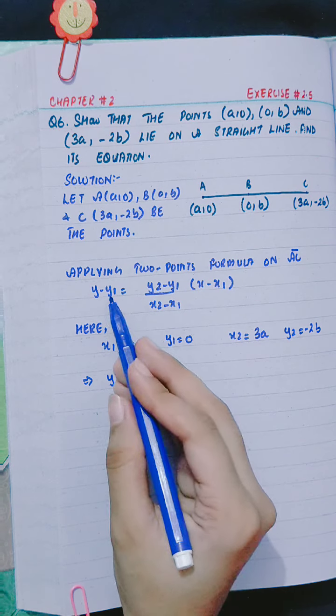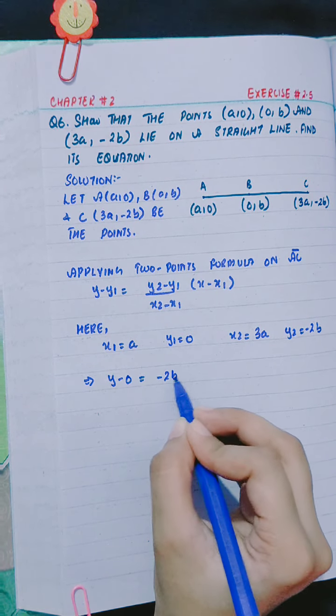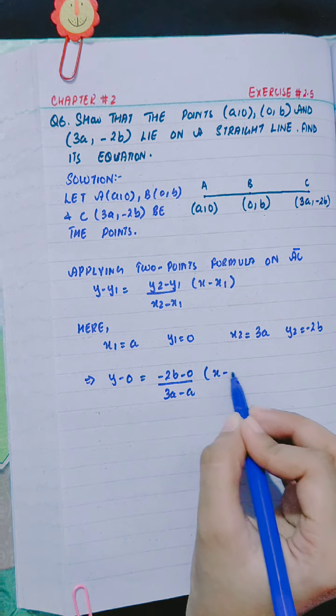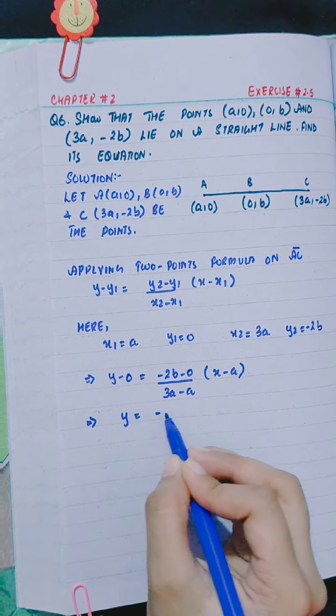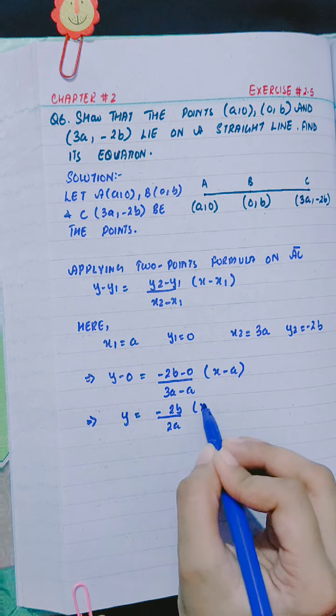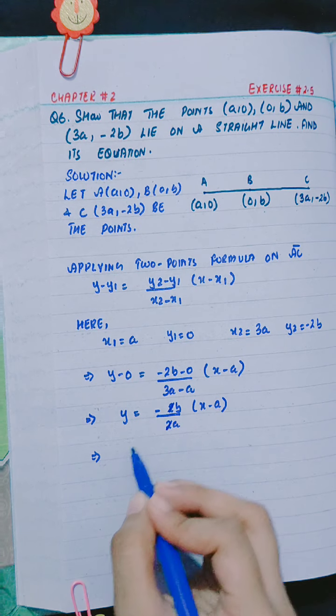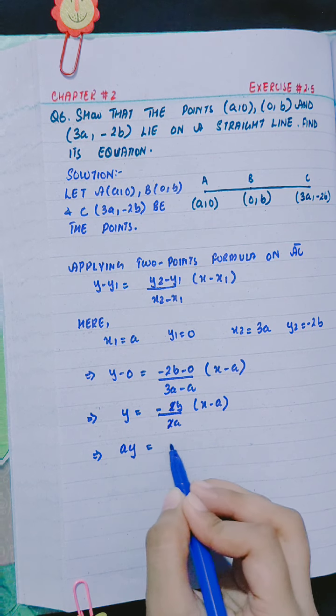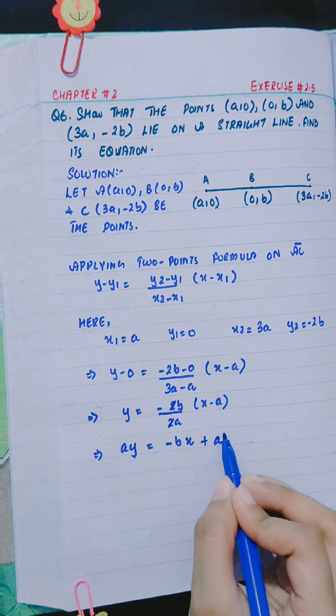Values ko substitute karenghe: y minus 0 equals minus 2b minus 0 divided by 3a minus a into x minus a. Y equals minus 2b divided by 2a into x minus a. The 2s cancel, giving y equals minus b divided by a into x minus a.